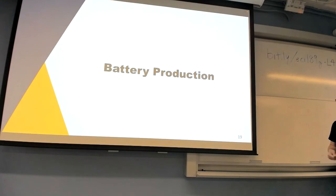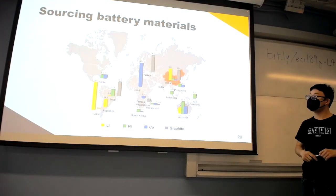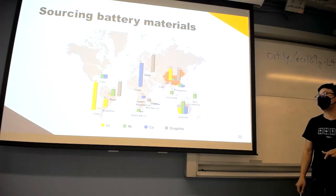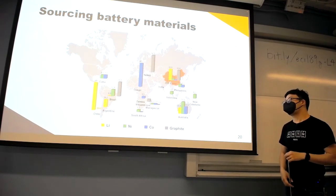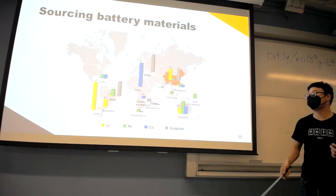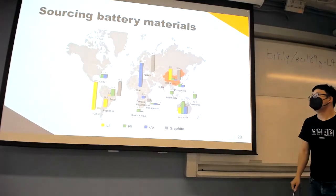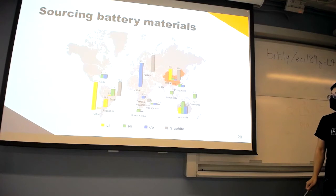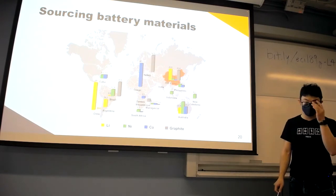Now, battery production — how are these batteries made? All of them require lithium. The biggest source is Chile, but China and Australia also have significant lithium production. The largest bottleneck for a common material in these batteries is cobalt, which comes almost entirely from the Congo.